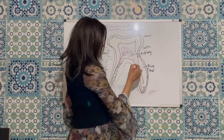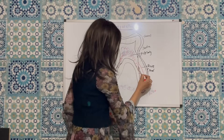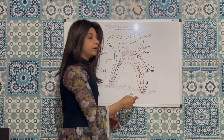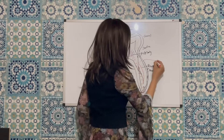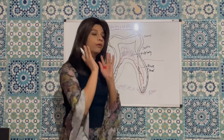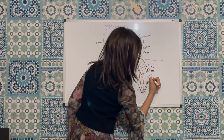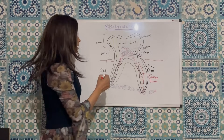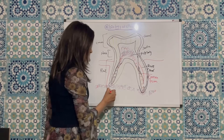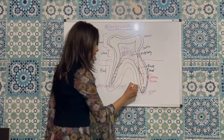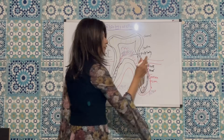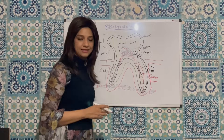The layer of connective tissue that binds the root of the tooth with the gums and the jawbone is called cementum. Gums are attached to the cementum by several fibrous bundles.